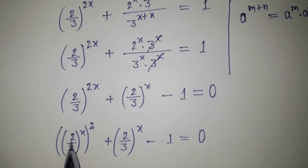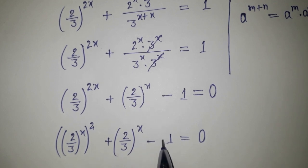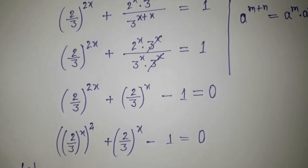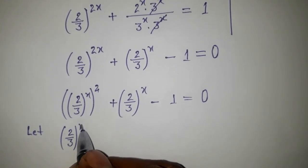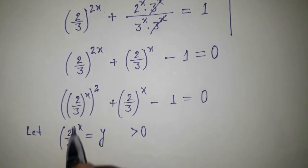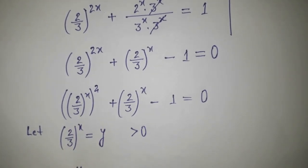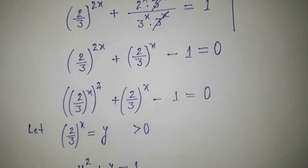Now (2/3) to the power x can be considered as another variable — let y equal (2/3) to the power x, where y must be greater than 0 because it is a positive number. So this becomes the quadratic equation: y squared plus y minus 1 equals 0.